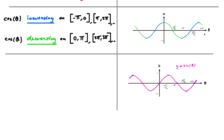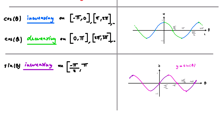For sine, I'll write: sine of theta is increasing on minus pi over 2 to pi over 2. You don't really need to memorize these — just make sure you understand the graph so you can read them off. The logic is the same as before: take this interval and move it in blocks of two pi to get every possible increasing interval.